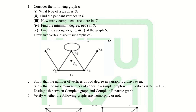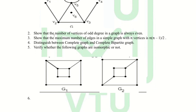The first question is: consider the following graph G. The sub-questions are: (a) what type of graph is G? (b) find the pendant vertex in G, (c) how many components are there in G, (d) find the minimum degree of G, and (e) find the average degree dG of the graph G, and draw the two vertex-disjoint subgraphs of G.